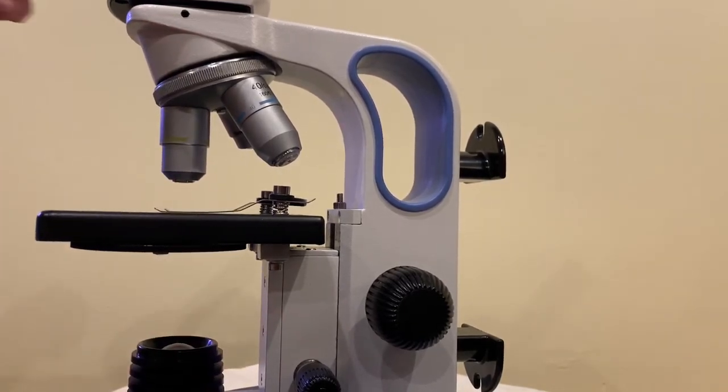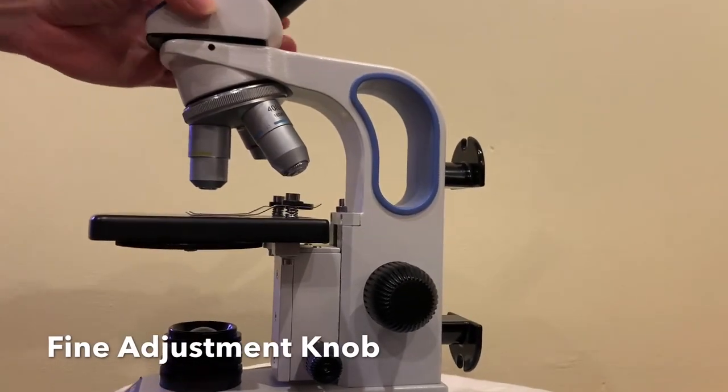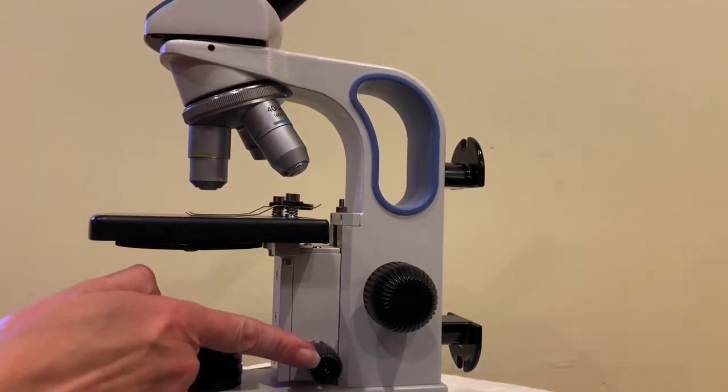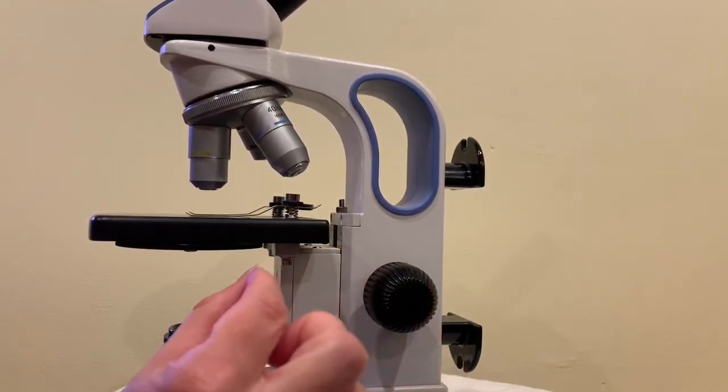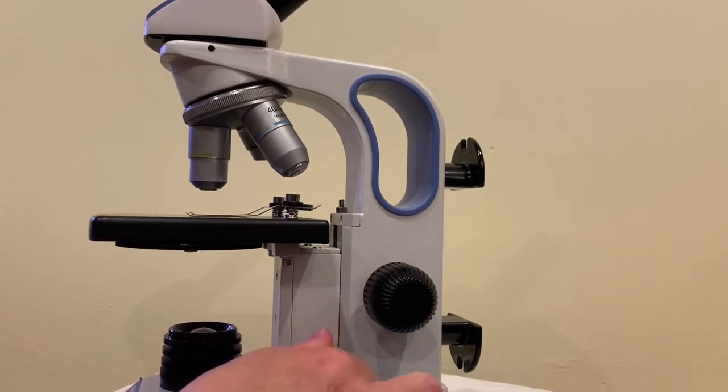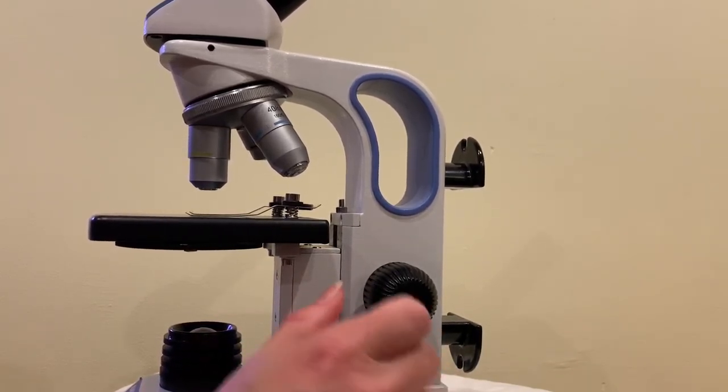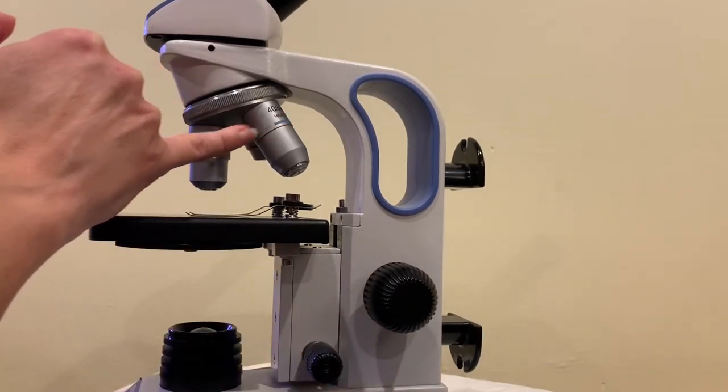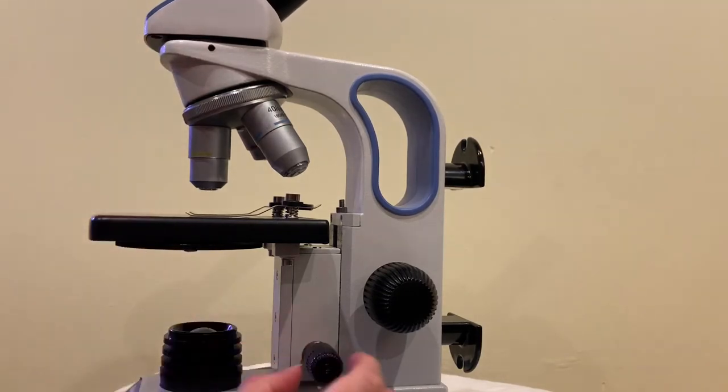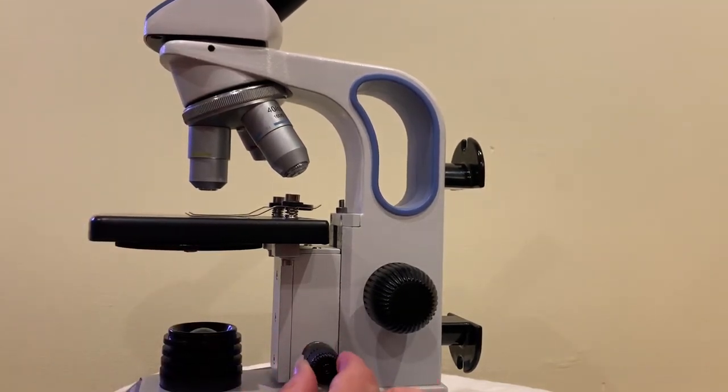From this point forward we're only going to use the fine focus knob. So now when I turn the fine focus knob what do you notice happening to the stage? Nothing really right? It's moving the stage up and down but very in small amounts. So we use the fine focus knob when we're using the larger magnifications because the fine focus knob fine tunes the focus.